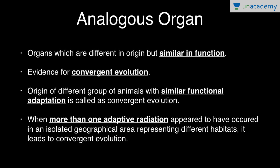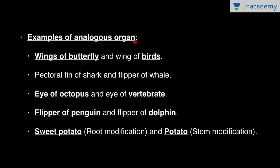Examples of analogous organs include wings of a butterfly and wings of birds. Butterflies are invertebrates and birds are vertebrates, but both have wings performing the same function — flying — though their structures are different. Similarly, the pectoral fin of a shark and the flipper of a whale, and the eye of an octopus and the eye of a vertebrate, differ in retinal position and structure but have the same function.